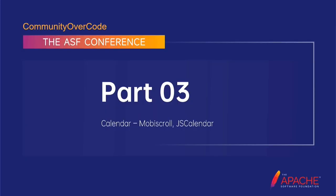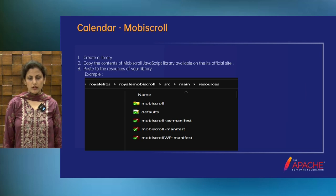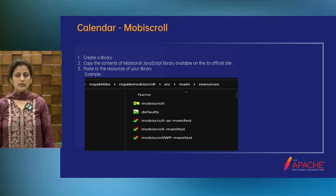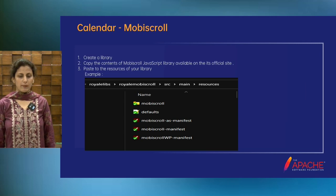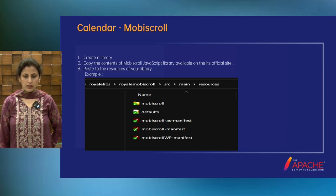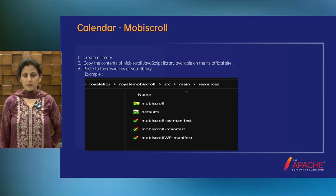Now we move to the next JavaScript wrapper library for the calendar — that is MobiScroll and JS Calendar. First, we start with MobiScroll. I am going to share the structure of how we build this calendar in Apache Royale. We have to create a library, specify the library name, and copy the contents of the JavaScript and CSS code to the project and paste those resources in your library.